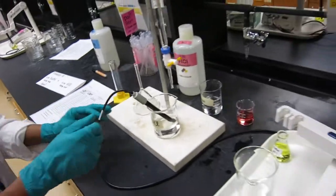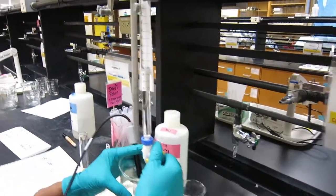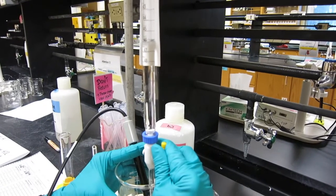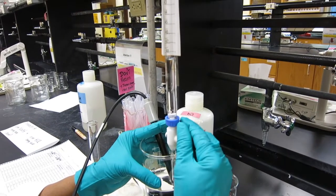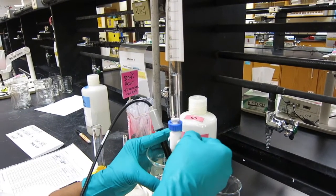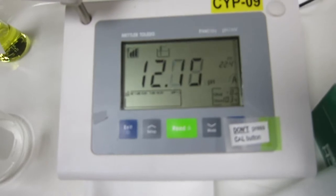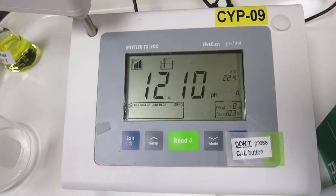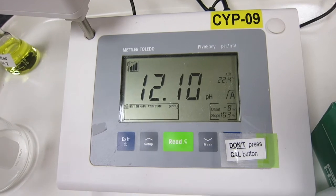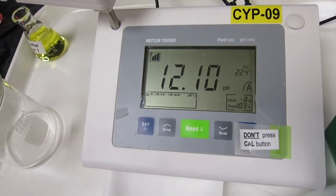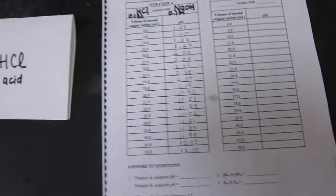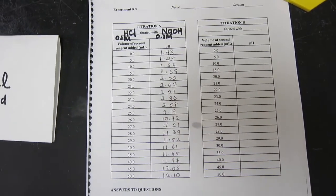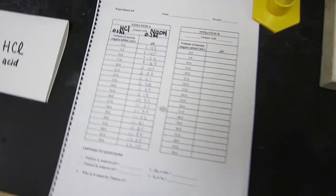We're going to have one last dispense here down to 50. We're going to read that again. This is our last reading for this titration part A. This is 12.10. So we complete our titration part A. We're going to give this form to you.